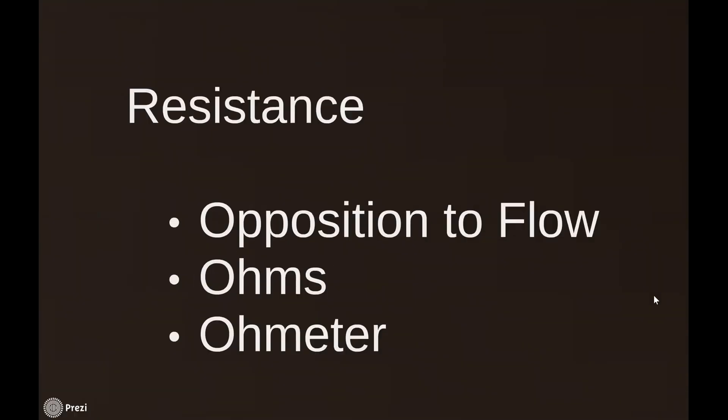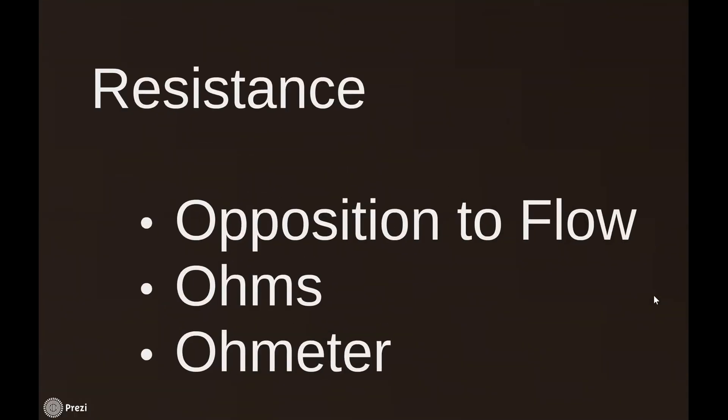The last one we have is resistance. The definition of that is the opposition to flow. So you have flow, you have pressure, and resistance is the opposition to flow. That's where we get electrical work happening. We measure resistance in ohms with an ohm meter. Those are electricity variables.